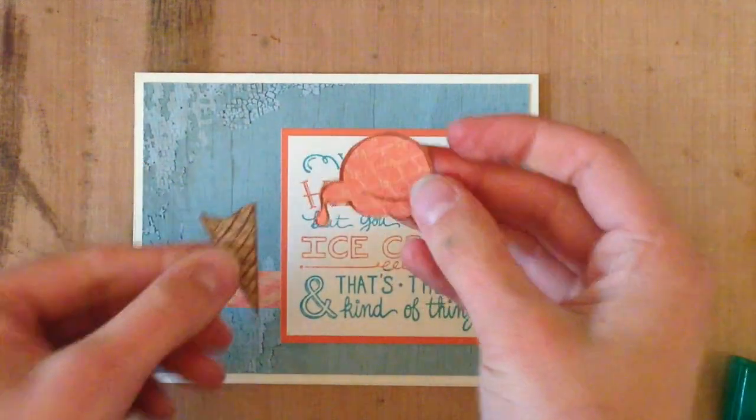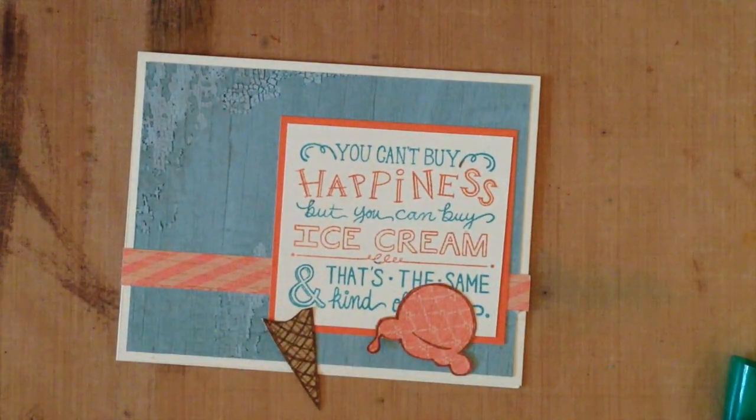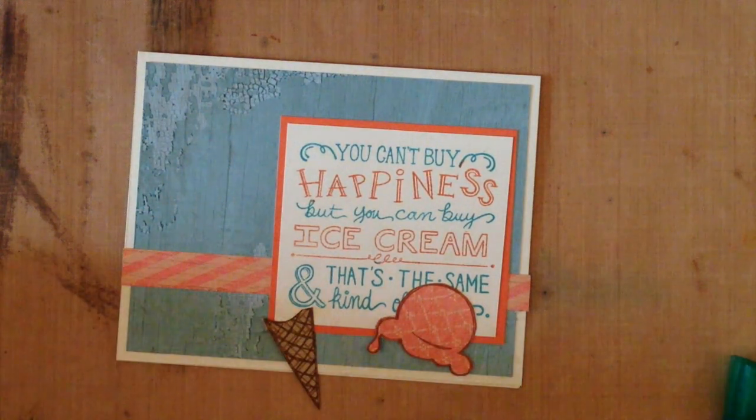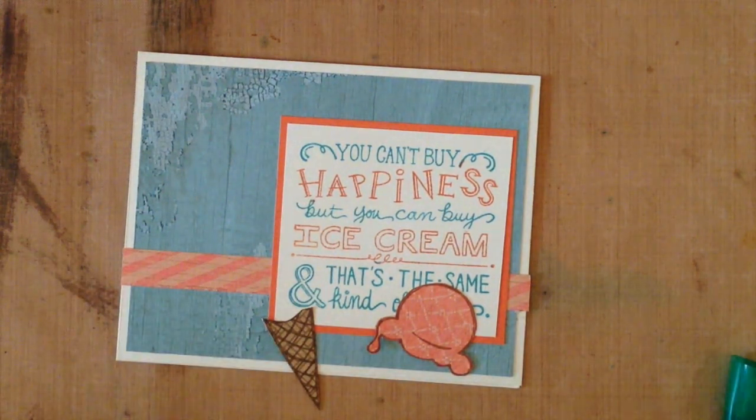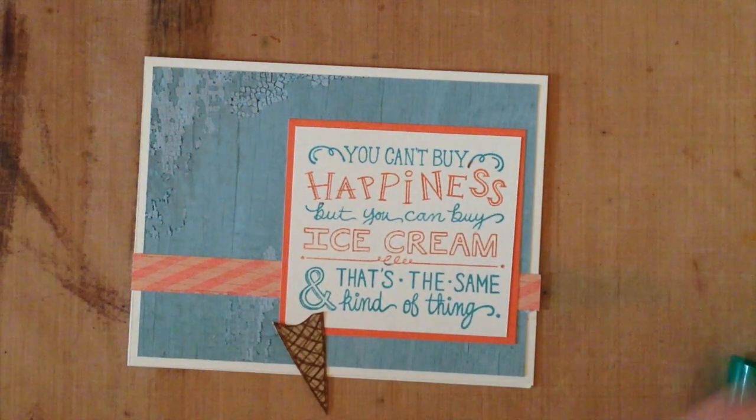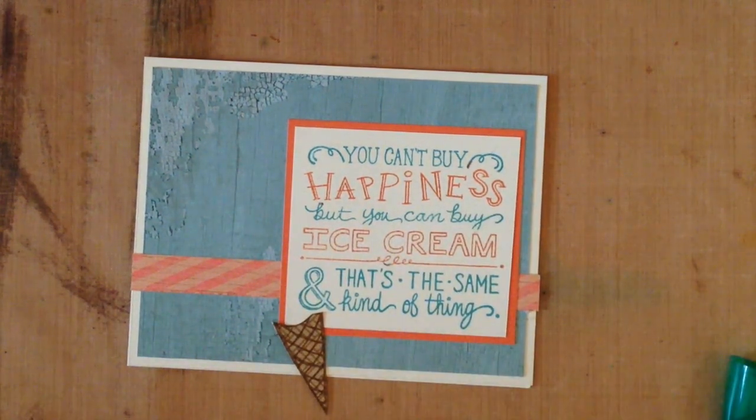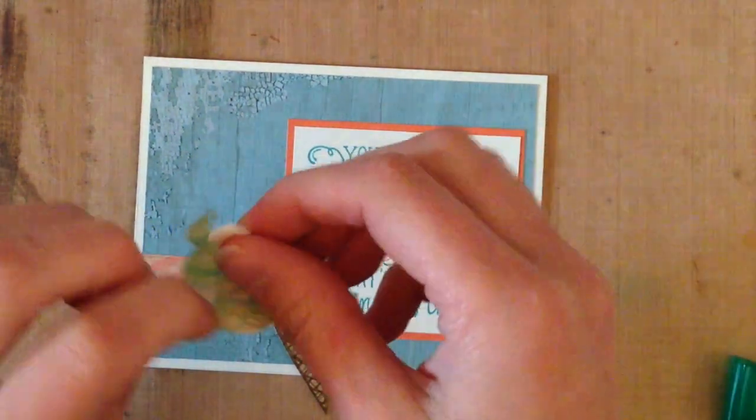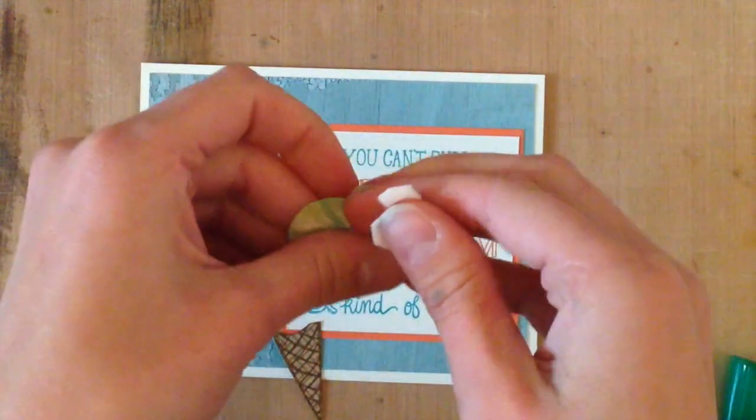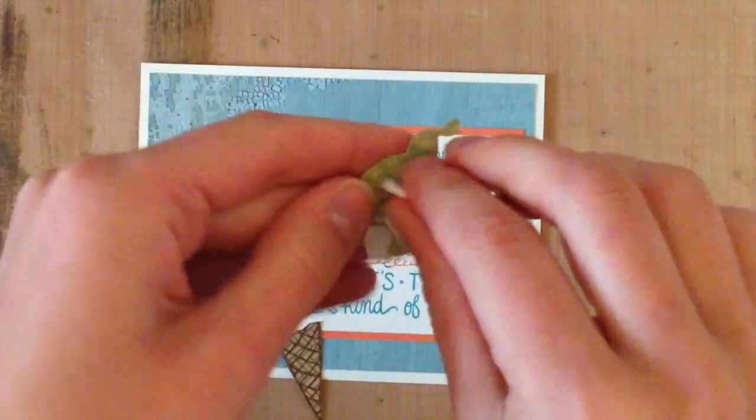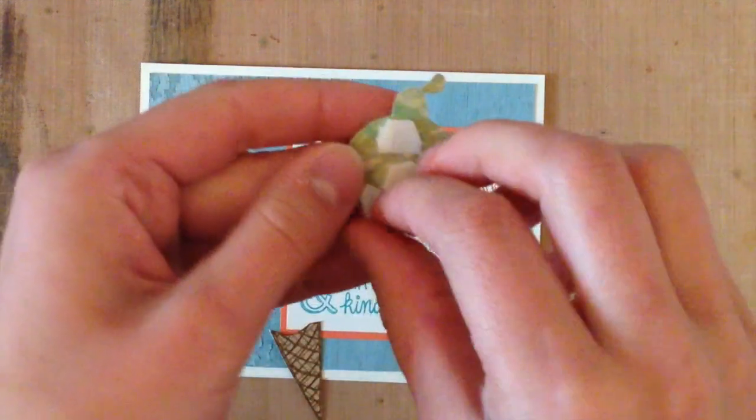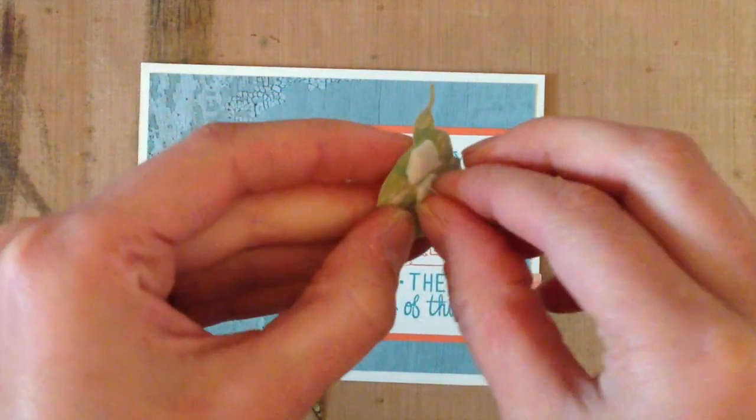I ended up fussy cutting both of those pieces out. The cone out of the brown and the ice cream from the sorbet cardstock. Then I had to glue them together and I added that with some 3D pop dots and arranged them onto my card to make a card that really just matches with all the patterned papers on it and is really cute with this ice cream and the ice cream sentiment.